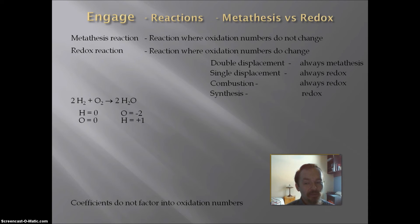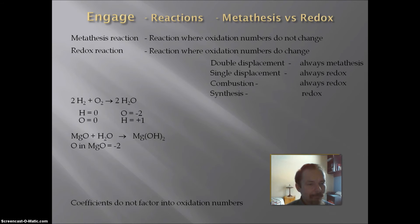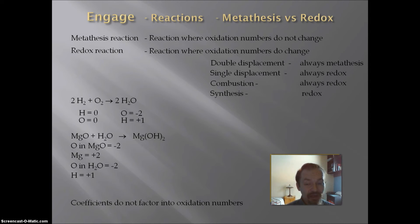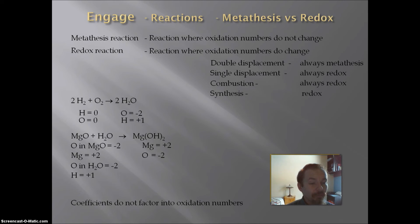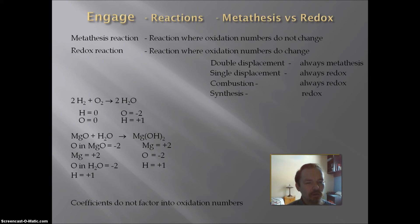But we have multiple types of synthesis reactions. Another example is a metal oxide reacting with water to make a base — magnesium oxide plus water yields magnesium hydroxide. In magnesium oxide, oxygen is in a compound so it's minus 2, and magnesium is a monatomic ion with a charge of plus 2, so it's plus 2. In water, oxygen is minus 2 and hydrogen is plus 1. In magnesium hydroxide, magnesium is plus 2, oxygen is minus 2, and hydrogen bonded to the non-metal in hydroxide is plus 1. Oxygen is always minus 2, magnesium is always plus 2, hydrogen is always plus 1 — so this synthesis reaction is a metathesis. Synthesis reactions can be either.